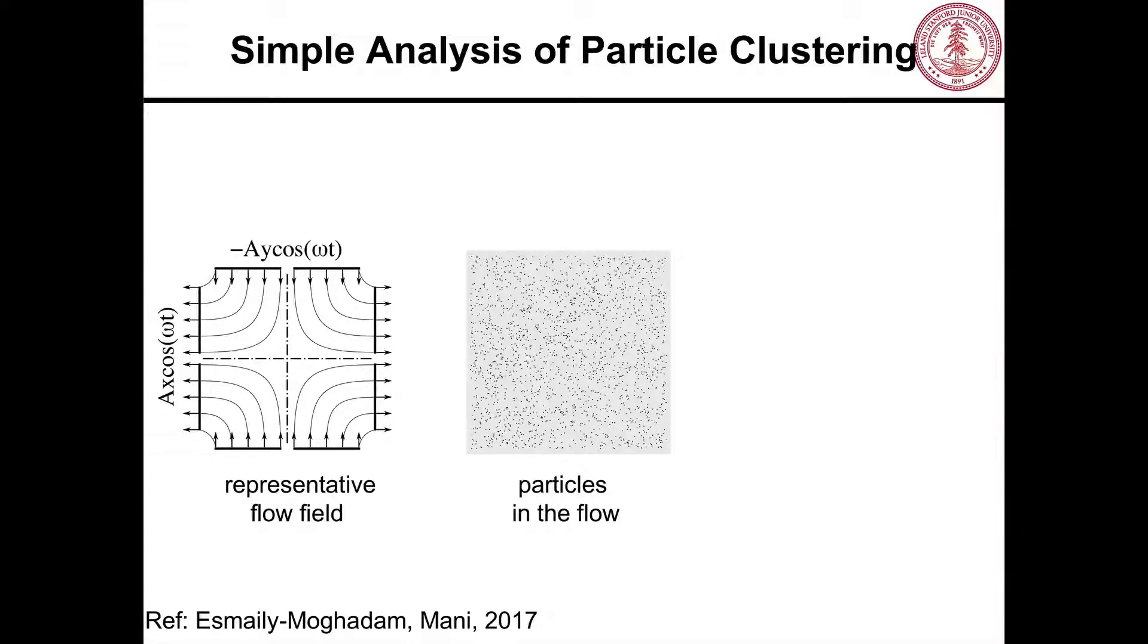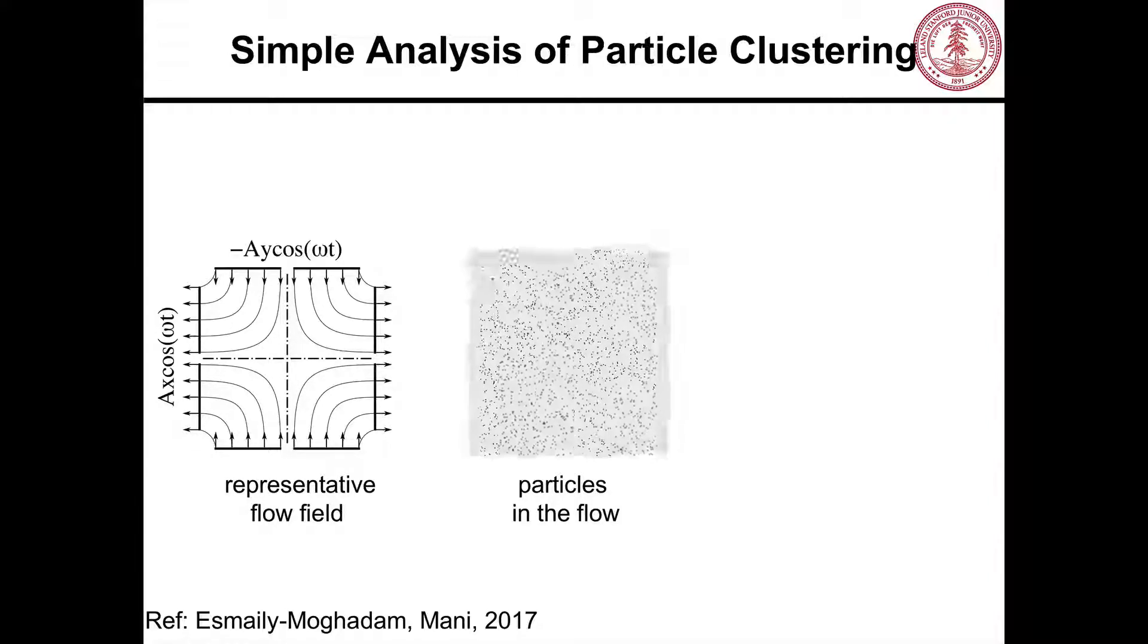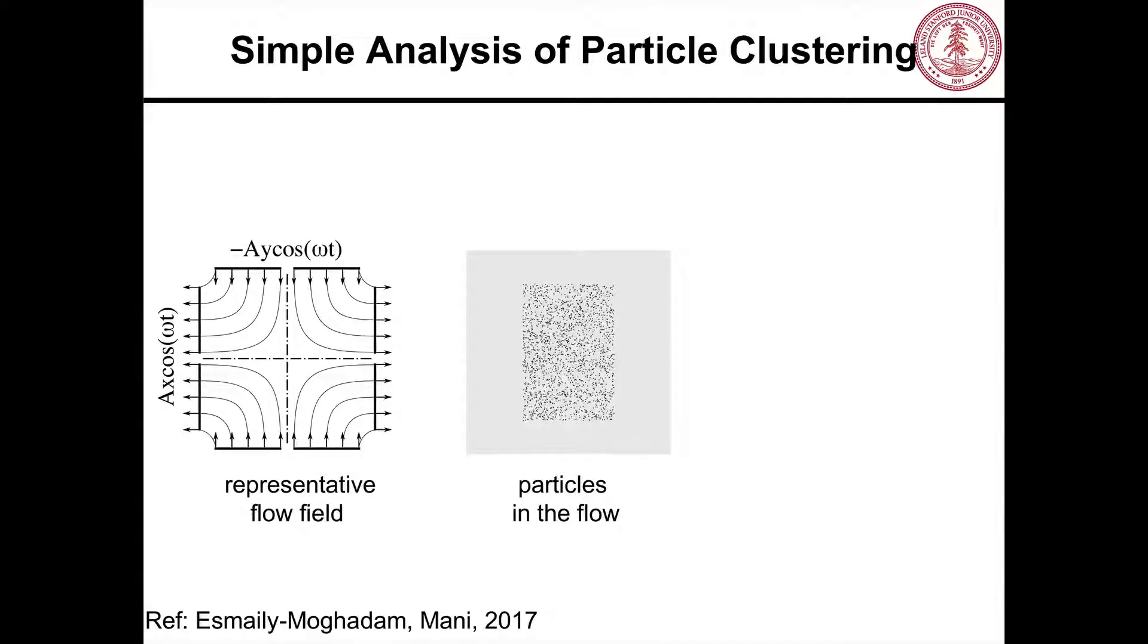Now I put particles in that flow and I look at its behavior. You can see that as the flow oscillates, particles gradually cluster. They accumulate at the center, and so that explains how this phenomena happens. Now we can change the amplitude of this flow and change the frequency to represent different range of experiences that particles can have in a given turbulent flow. Turbulent flow has wide range of frequencies and wide range of amplitudes.